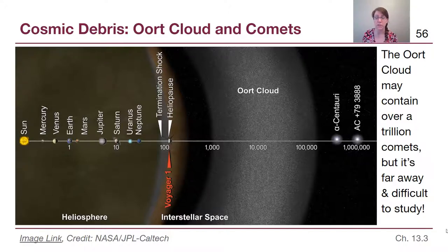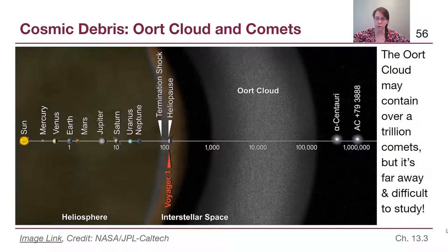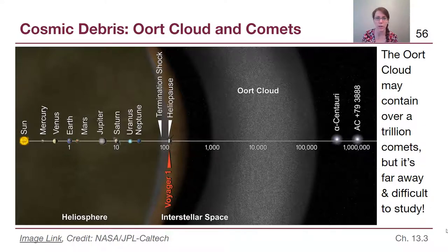Keep in mind this Oort Cloud surrounds the Sun. We can still study all the stars even farther away because those stars create their own light. But objects in the Oort Cloud are not shiny, not big, and not creating their own light.